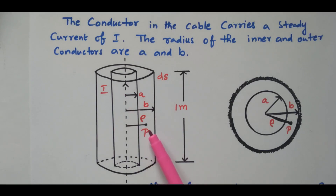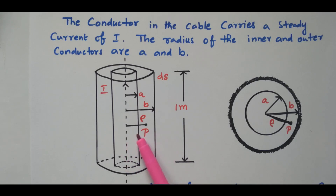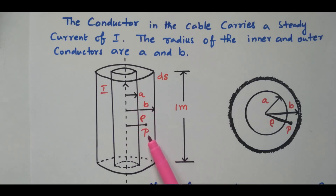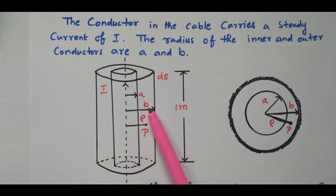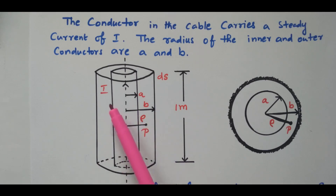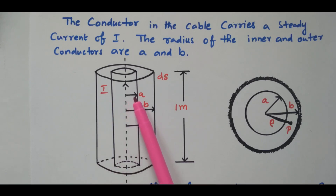For calculation purposes, we consider one point P which is in between A and B — greater than A and less than B — at radius ρ meters. The current flowing through the conductor is I. This is the inner conductor with radius A and the outer conductor with radius B.